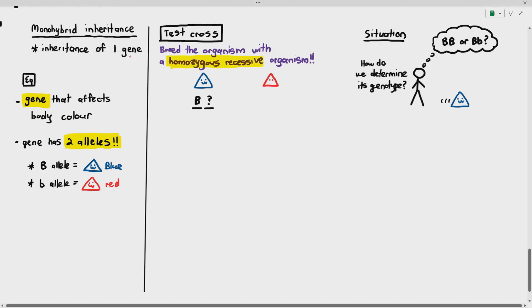And the homozygous recessive organism is small b, small b. And we know that the color is going to be red no matter what. So what you just have to do is, when you breed them together, this concept is known as test cross. And by doing so, you will be able to identify the unknown genotype. So how does that work? Let's check it out.